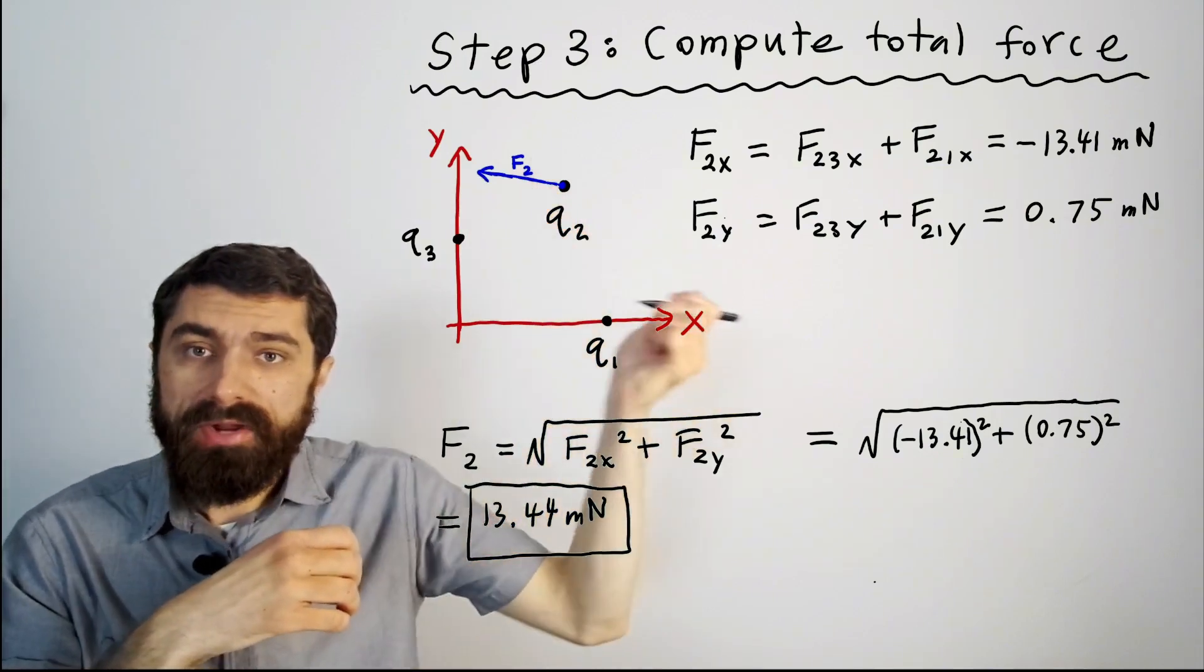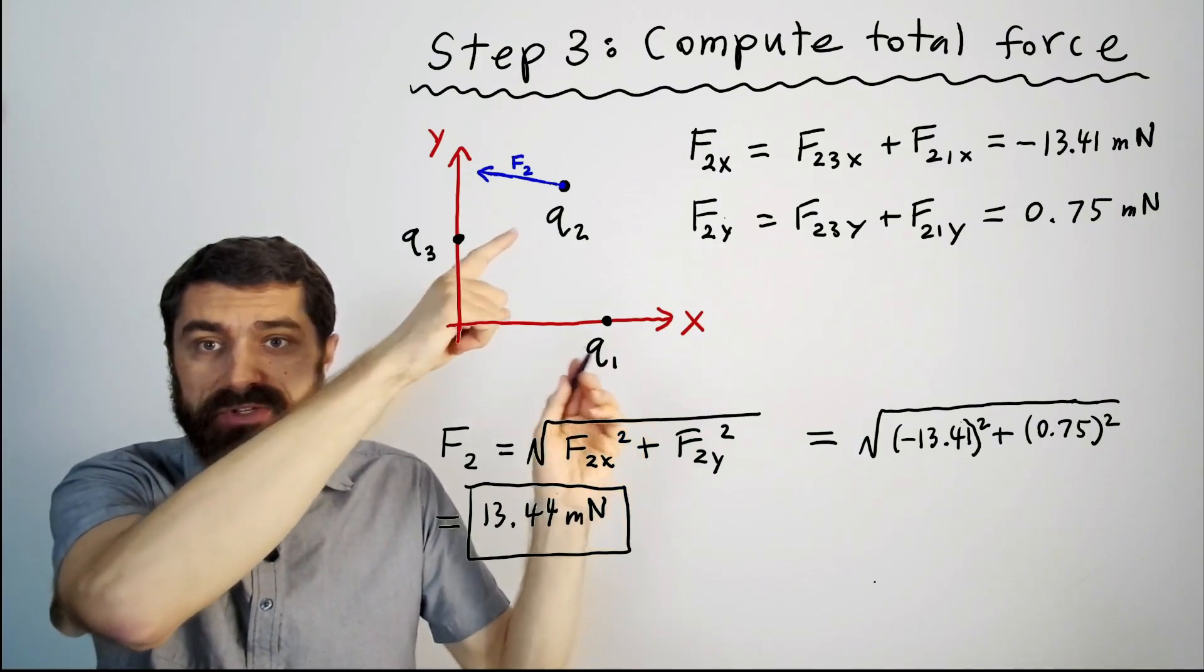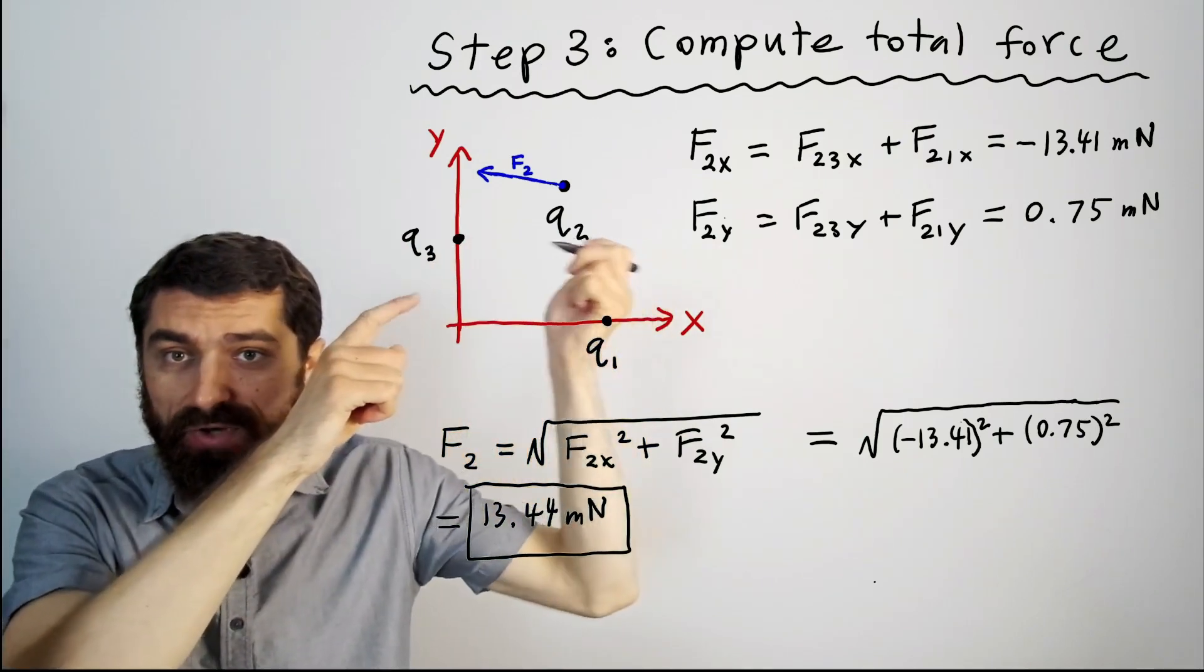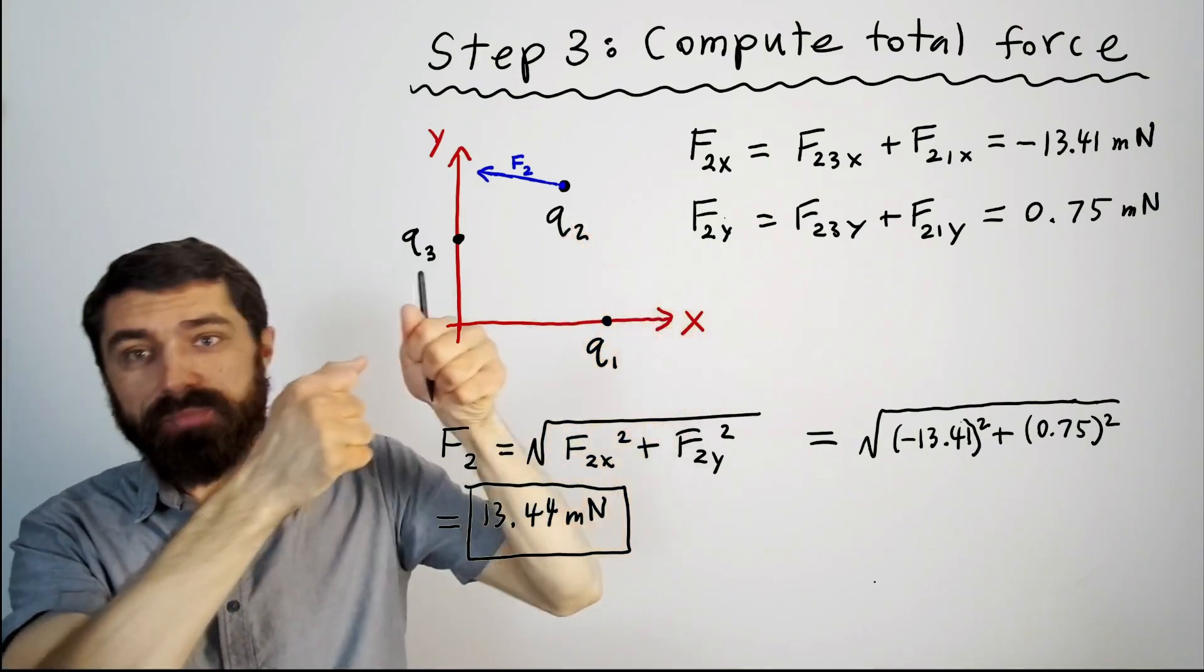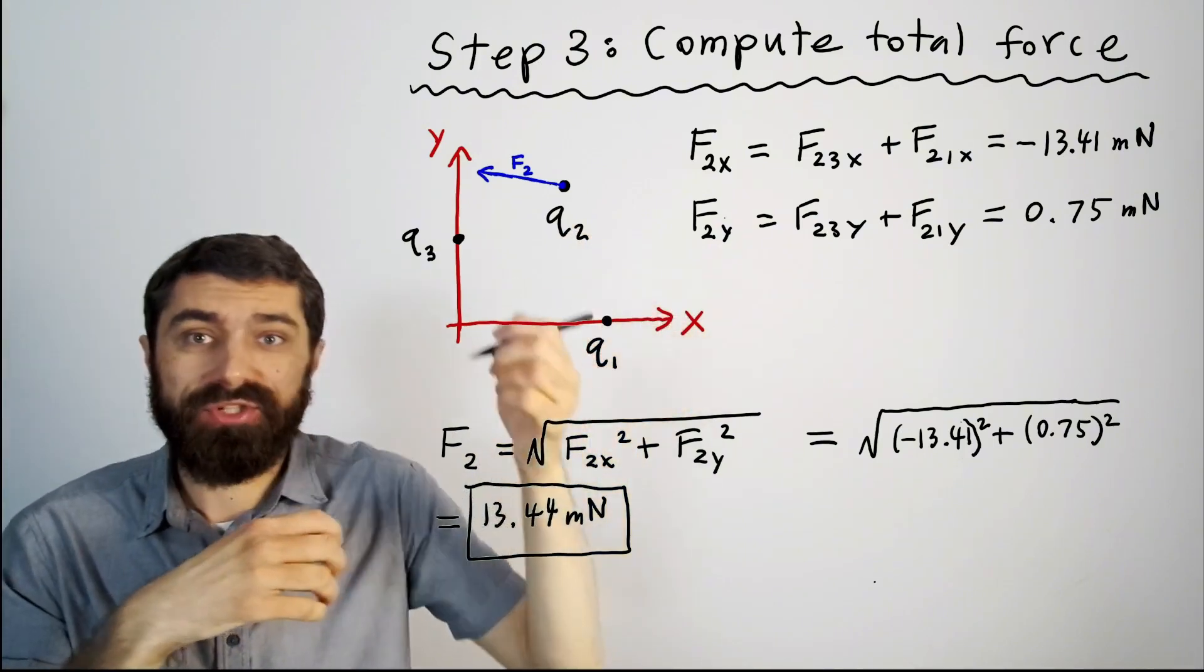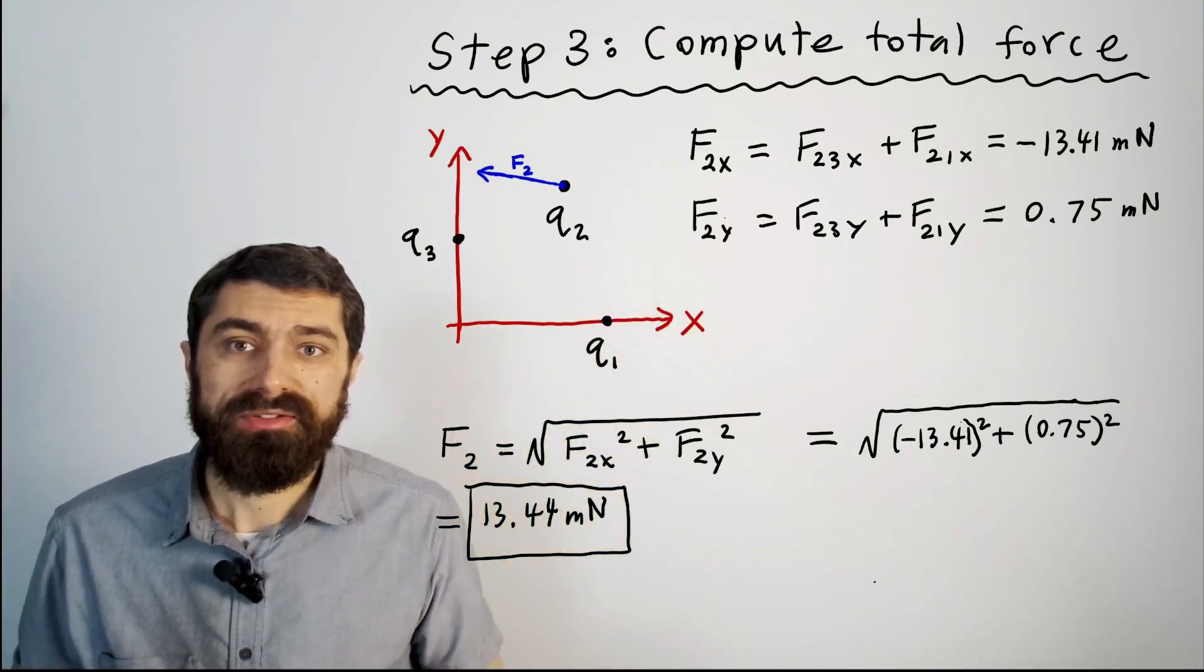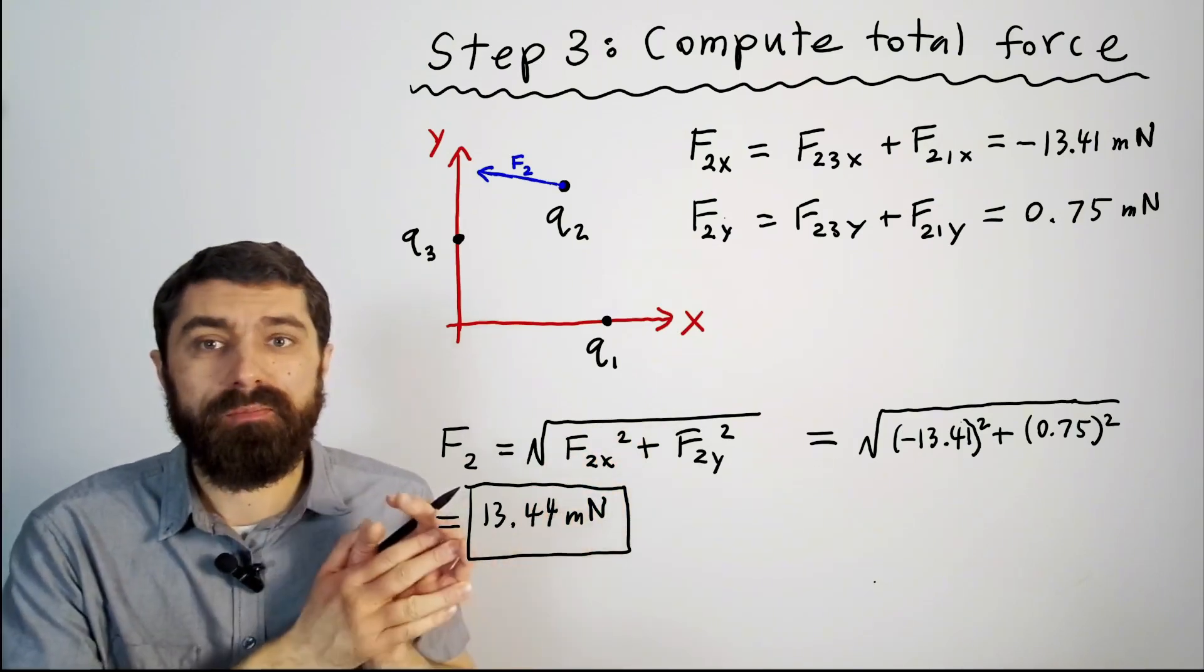On the other hand in the x direction keep in mind you know that these charges they're repelling each other right so it wants to push the charge this way but also q3 is exerting an attractive force on q2 so it wants to pull q2 there. So it makes sense that because there's a repulsion and attraction that the x component would be quite large. So our answer does make sense.